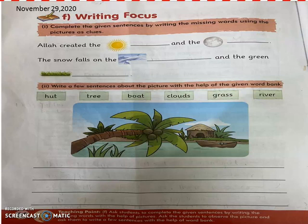So part F, writing focus. Question number 1 is: complete the given sentences by writing the missing words using the pictures as clues. So what we have to do here, we have to think about a word that will fit in the blank, and the hint is given in the form of a picture. So let us start.